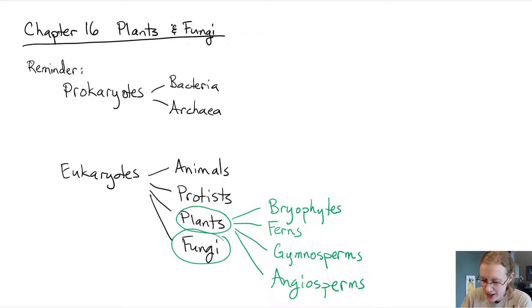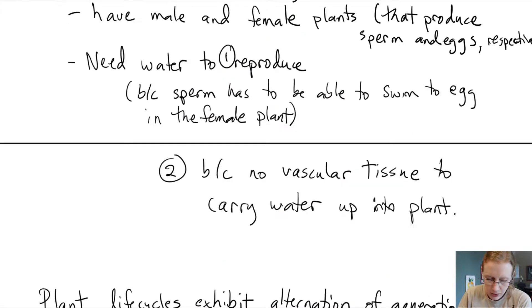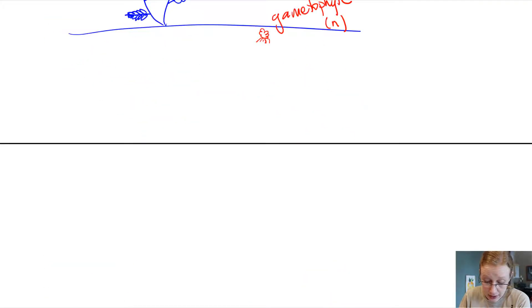On to our third category of plants, the gymnosperms. Gymnosperms are called the naked seed plants. They do produce seeds. So here's our first category of seed producing plants, the gymnosperms.